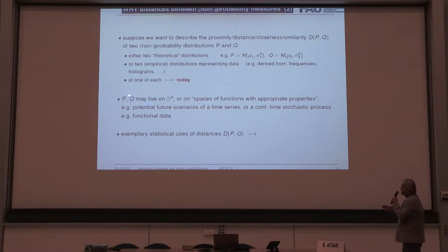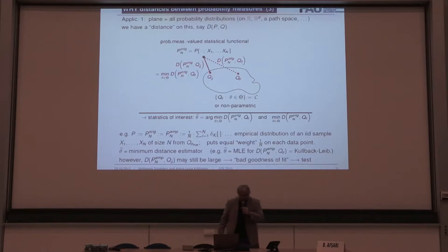So about the generality, P and Q may live on any space. There might be R^d, but there might be also space of functions, so you can do it also for measuring the distance between two solutions of stochastic differential equations. You can do it for functional data analysis, etc.